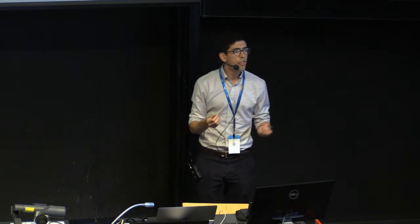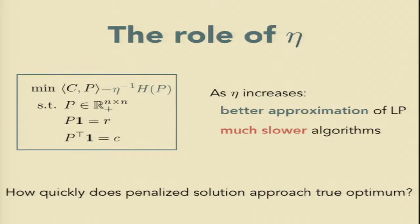it's important that I choose eta large enough that the program not be distorted too much by the presence of this extra term. So a larger eta means a better approximation to my original problem. Unfortunately, all of the algorithms we know to solve this entropically penalized program degrade substantially as eta grows.